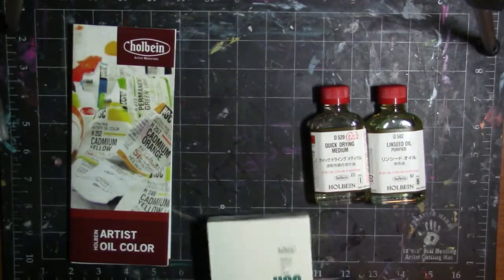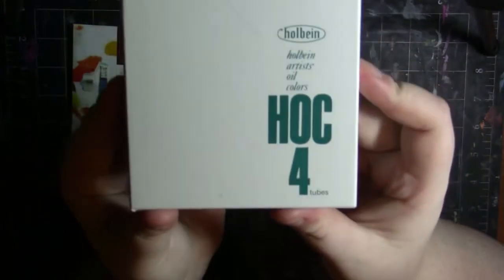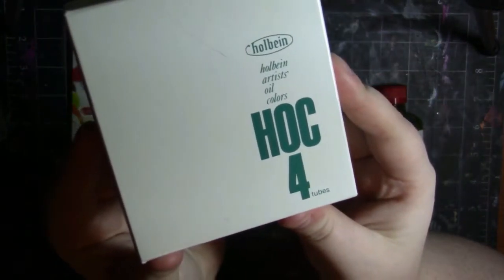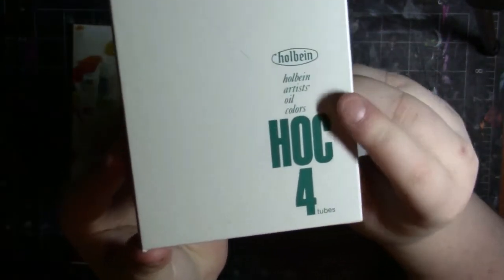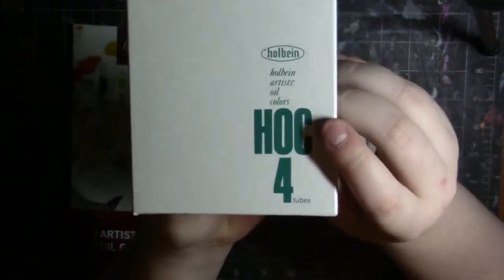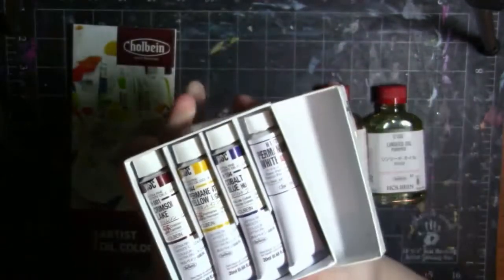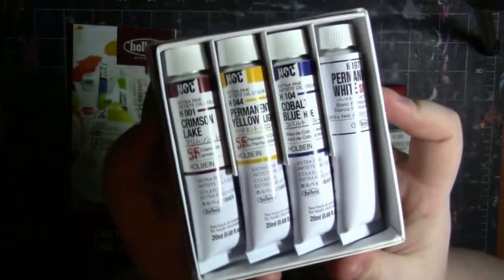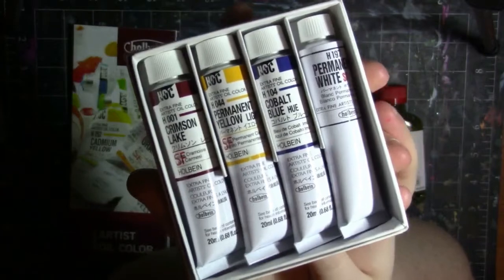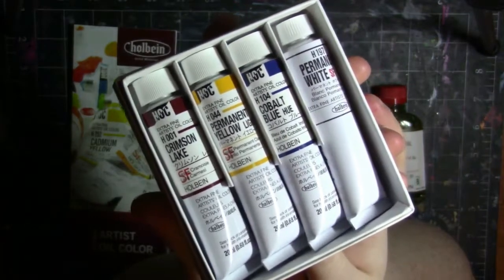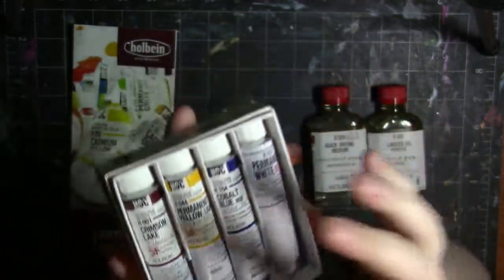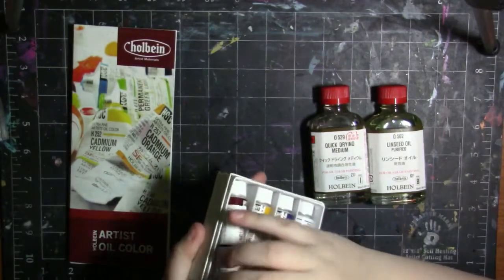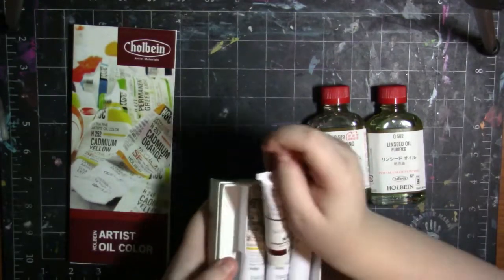So first thing we have are the oils and here they are. This is what the box looks like. There are four tubes in here and I believe they are all 20 milliliters. So let's pop the lid off and as you can see here are the tubes of paint. We have crimson lake, permanent yellow light, cobalt blue hue, and permanent white. I'm going to get the crimson out so we can take a better look at it.